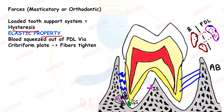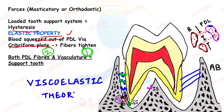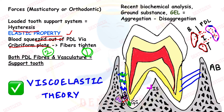The blood goes from the PDL into the marrow spaces of the bone through holes in the plate of the bone called the cribriform plate. Through this cribriform plate, blood is squeezed out of the PDL, and because of that the fibers within the PDL tighten and forces are transmitted. When the blood comes back, the tissues return to their normal position. This is primarily mediated by the vasculature, with fibers playing a secondary role. These tissues show elastic properties.